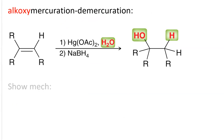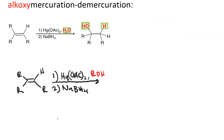Alkoxymercuration-demercuration is similar to oxymercuration-demercuration. In oxymercuration-demercuration, the substrate is an alkene, and we react it with mercuric acetate and water, followed by sodium borohydride, giving us a Markovnikov alcohol. Instead of water, for alkoxymercuration-demercuration, I use an alcohol, and this gives me a Markovnikov ether.